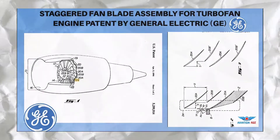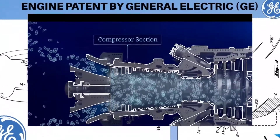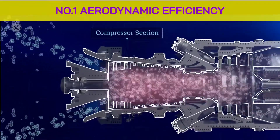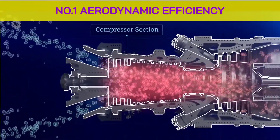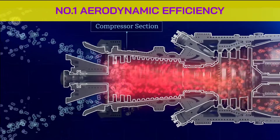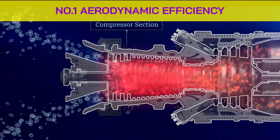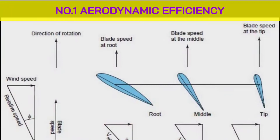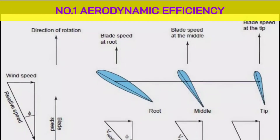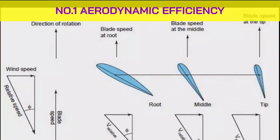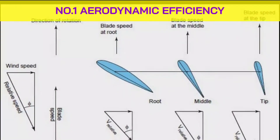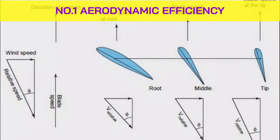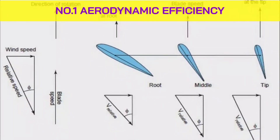Moving on to the reasons. Number 1: Aerodynamic Efficiency. As you know, the tip moves faster than the hub. So to make the blade aerodynamically efficient and prevent the tip of the blade from reaching and breaking the speed of sound barrier, we keep the tip at a lower angle of attack and the root high. The same concept is used for designing propellers, wings, and rotor blades of helicopters.